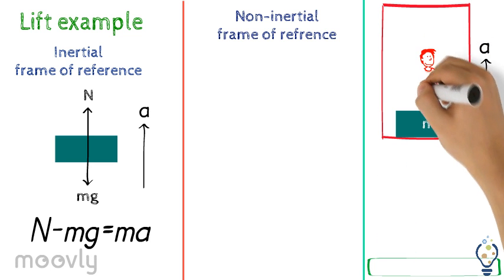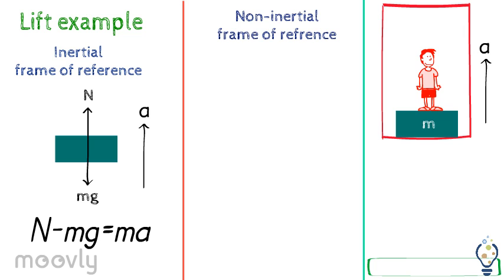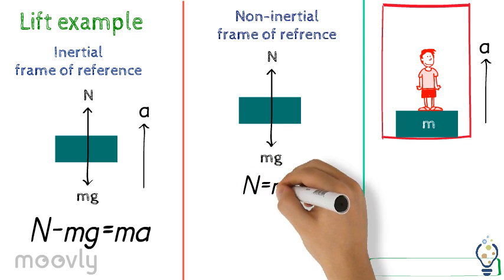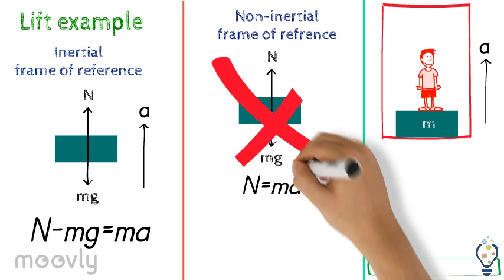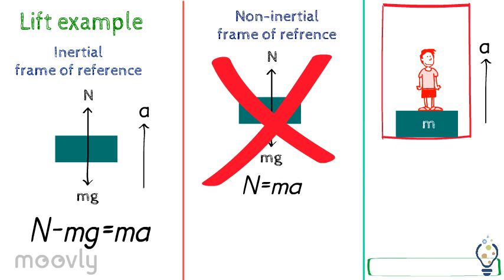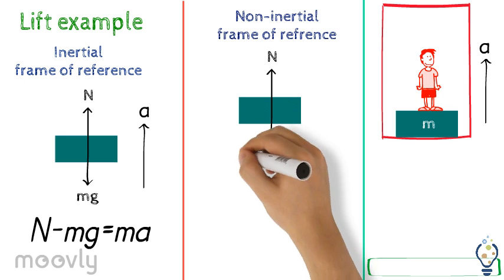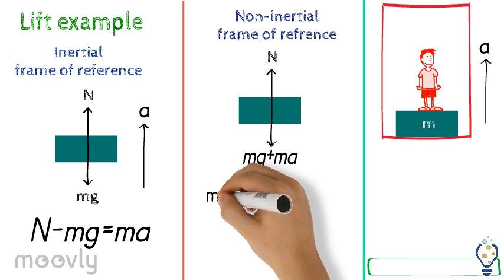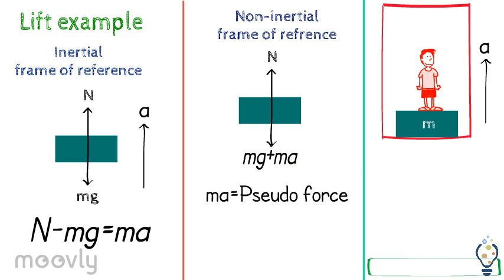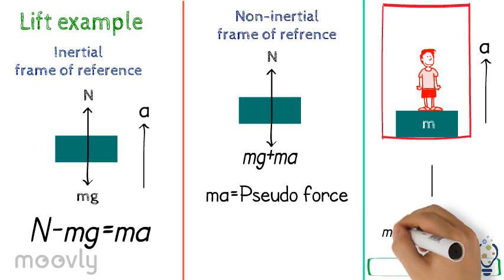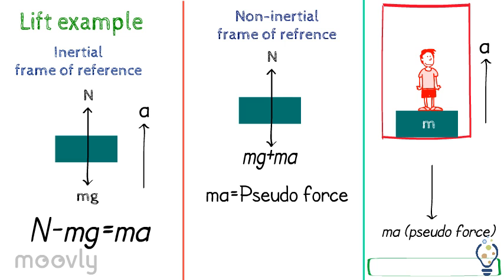Now, in a non-inertial frame of reference, the observer is inside the lift. The FBD imagined by the observer in a non-inertial frame of reference can also be written using Newton's equation of motion. However, this equation of motion is incorrect as we have not considered the acceleration of the frame of reference. Therefore, to convert the non-inertial frame of reference to an inertial frame of reference, we use the concept of pseudoforce. Then Newton's laws of motion also become valid in the non-inertial frame of reference. Remember, pseudoforce always acts in a direction opposite to the acceleration of the frame of reference.